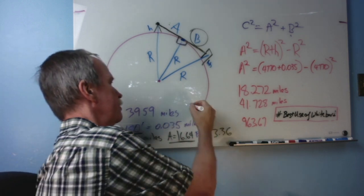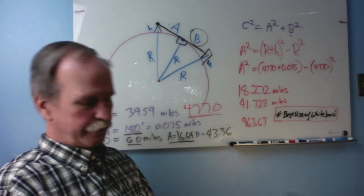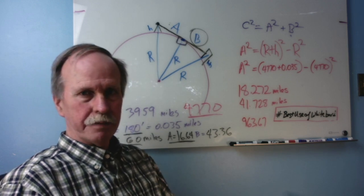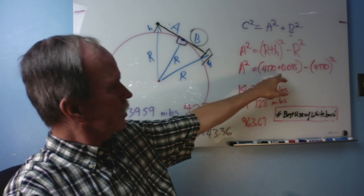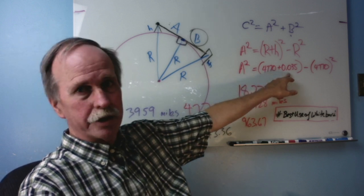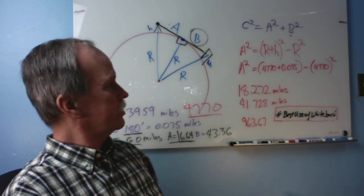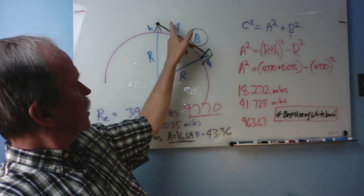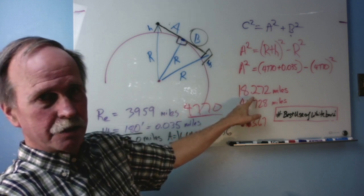The radius of the earth that we're going to use is going to be not 3959. We're going to use 4770 because that is the refracted radius of the earth. So putting those numbers in, here's our radius of the earth plus the height of Warren Dunes minus the radius of the earth. And both of those terms are squared. That means that this distance a is 18.272 miles.